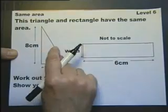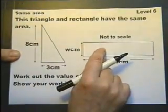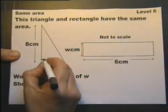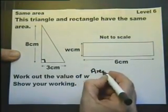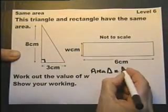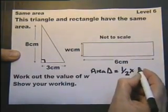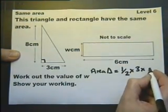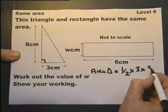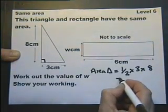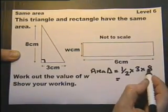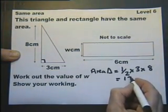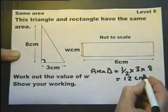This triangle and this rectangle have the same area. So if this is a right-angled triangle, then the area of this triangle is half the base, which is 3, multiplied by the height, the perpendicular height, which is 8. When we're multiplying, we could multiply this in any order. I'm going to choose to do 3 eighths of 24, and half of 24 is 12 square centimeters.